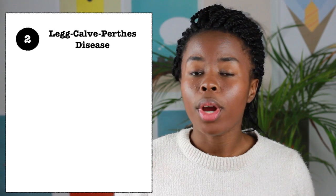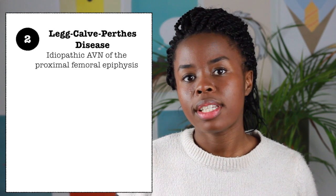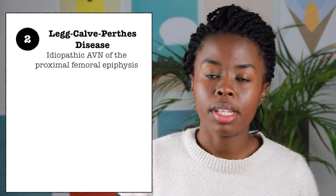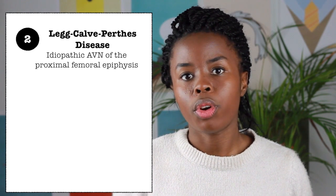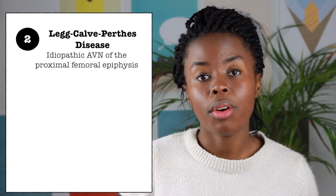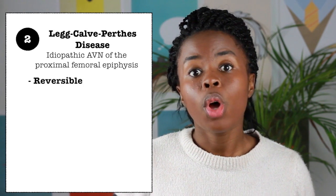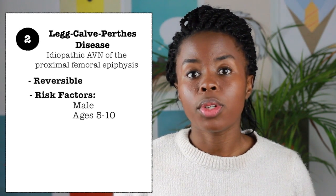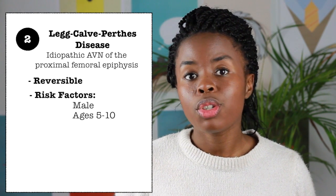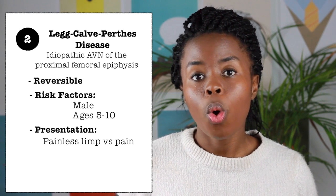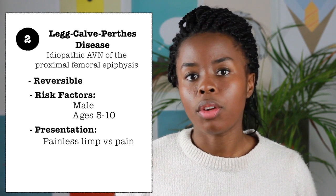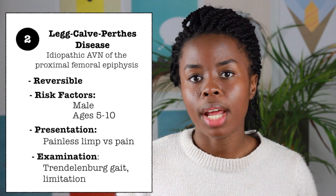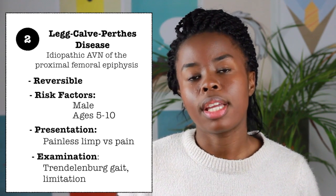Legg-Calvé-Perthes disease, or LCP, is an idiopathic type of avascular necrosis of the proximal femoral epiphysis. Unlike other causes of necrosis such as septic arthritis, steroids, and alcohol, it is reversible, but the child will have a permanent limb length discrepancy. It commonly affects boys between the ages of 5 and 10. The patient usually presents with a painless limp, or may have pain in the knee, hip, and groin. Examination may reveal a Trendelenburg gait and loss of internal rotation and abduction. Limb length discrepancy is a late finding.